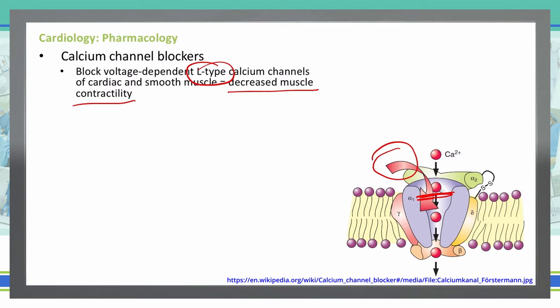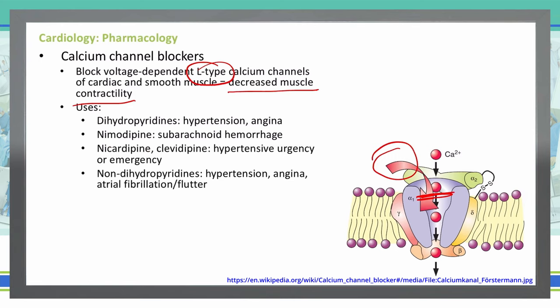Without depolarization and contraction of the muscle, the contractility will be decreased. So what do we use calcium channel blockers for? They are broken down into a couple of different categories: the dihydropyridines, which include nimodipine, nicardipine, and clevidipine, and then the non-dihydropyridines.